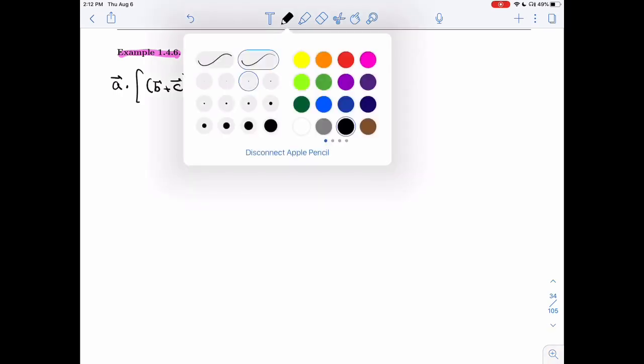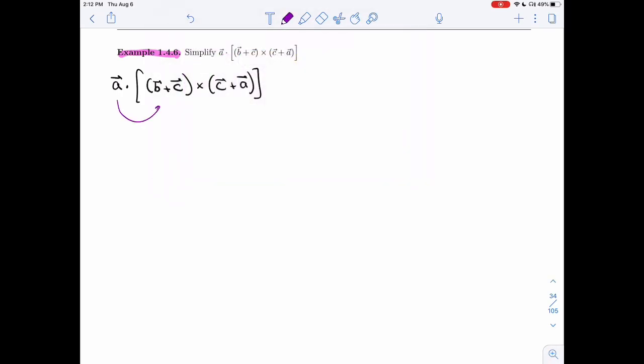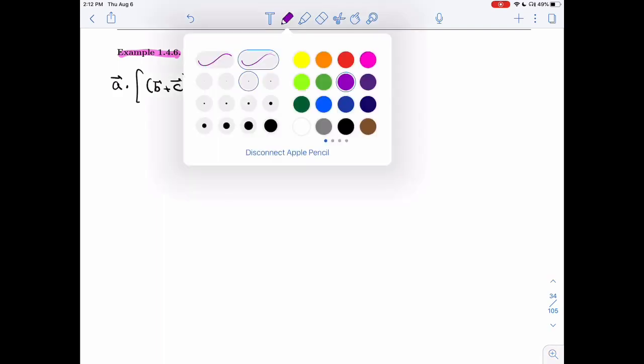All right, so you might want to try first to distribute this in, but we don't know that the dot product distributes over the cross product. In fact, it doesn't because it wouldn't make sense. You would end up with a cross product of two numbers, which doesn't exist.